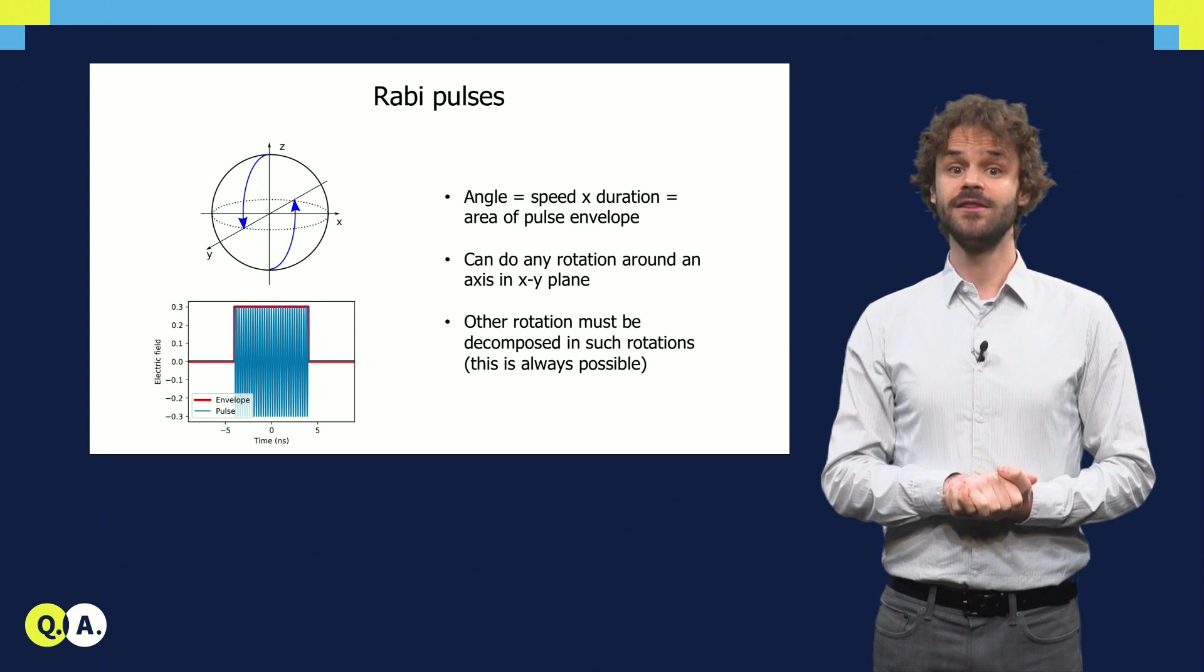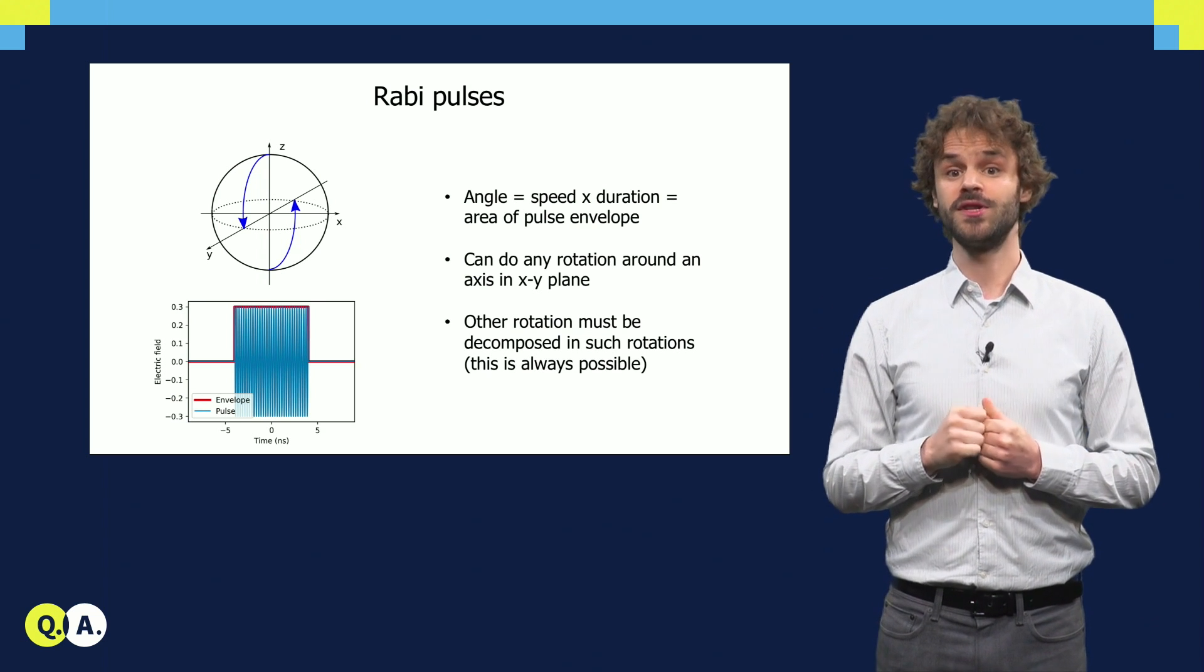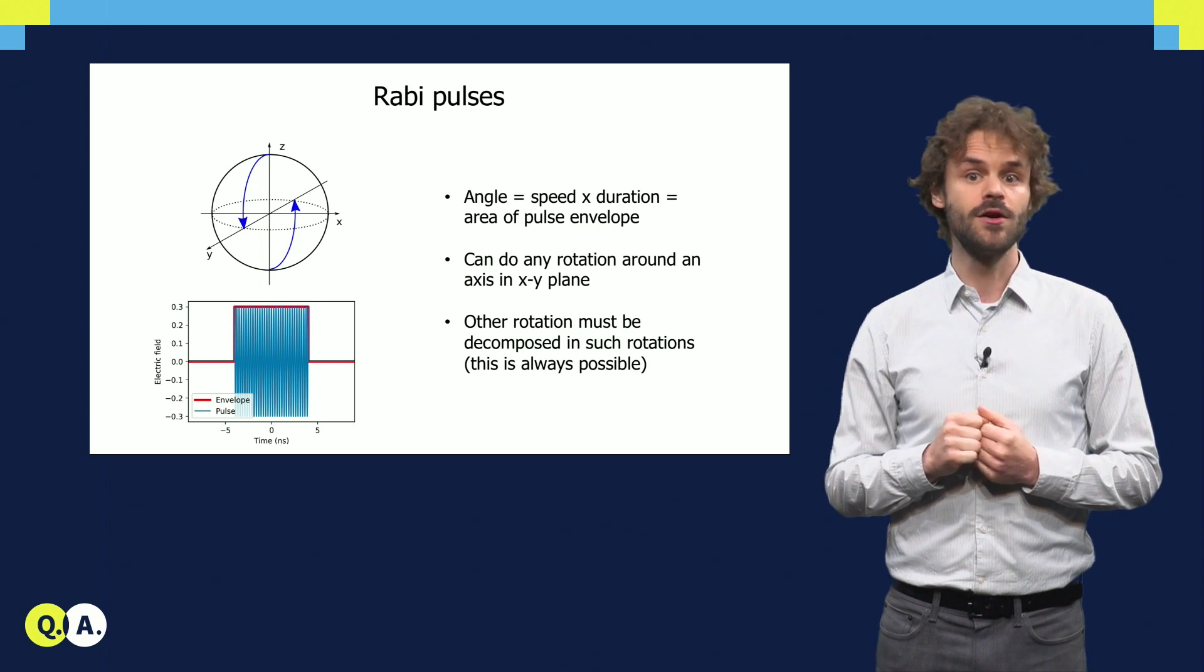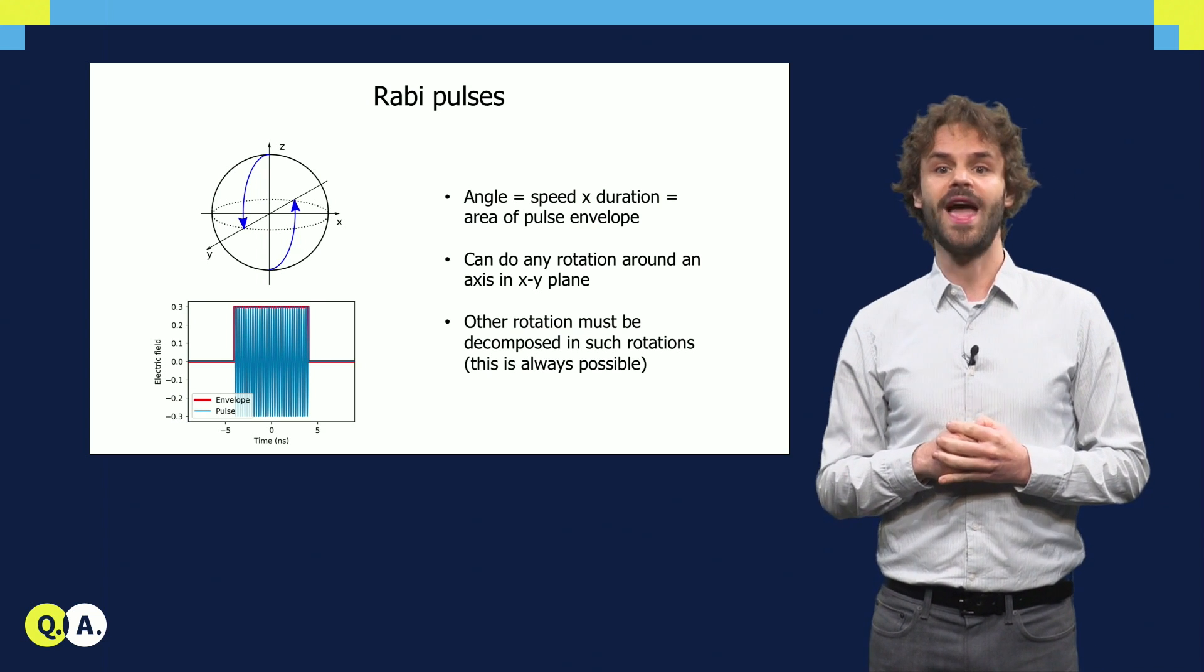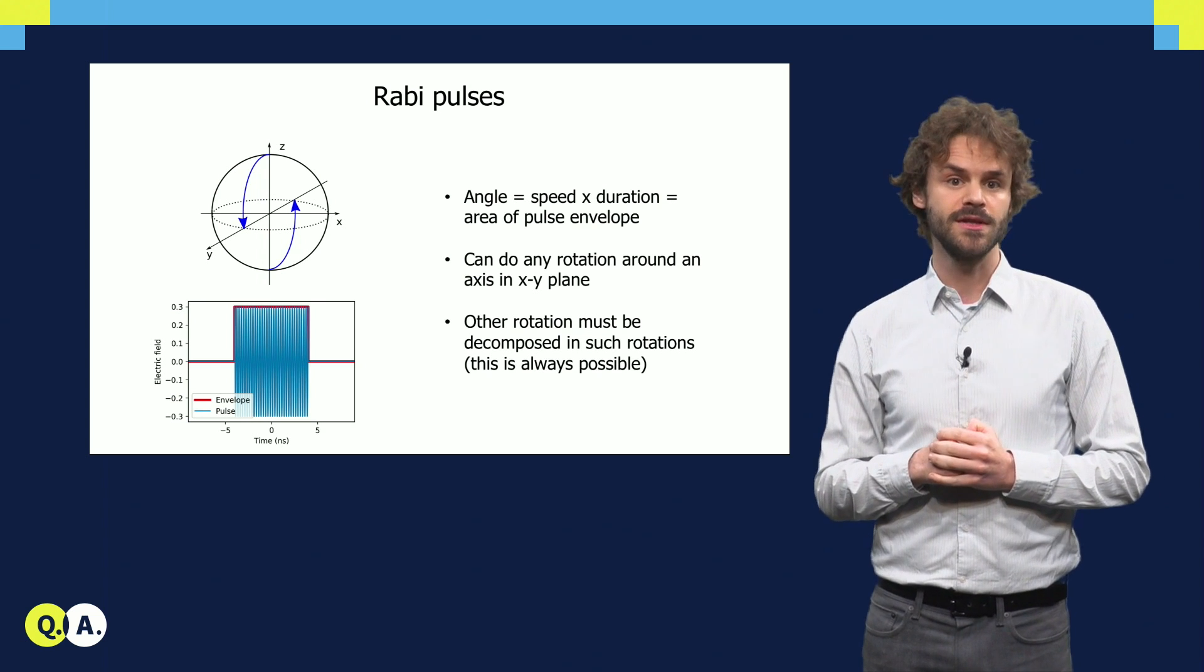This way, we can perform any rotation with the axis in the xy-plane. If we want to rotate around another axis which does not lie in the xy-plane, we have to decompose it. It turns out that any single qubit gate can be performed using no more than three microwave pulses in sequence.